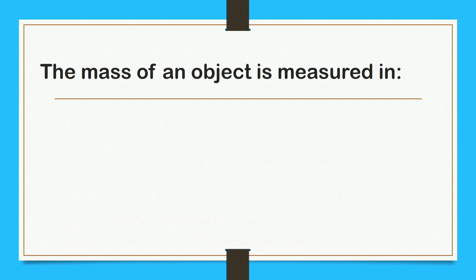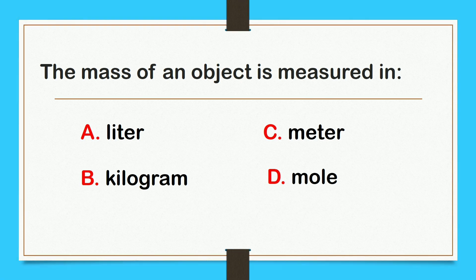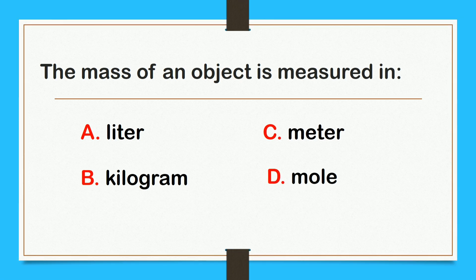The mass of an object is measured in: A, liter. B, kilogram. C, meter. Or D, mole. The answer is letter B, kilogram.